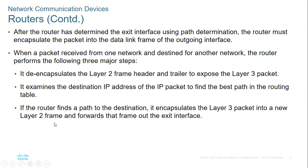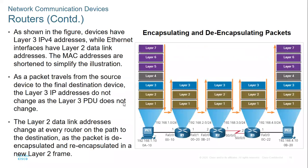When two routers communicate, they already know each other's MAC addresses. When the packet moves from one router to the other, we need to change the destination MAC address — the new destination MAC address will be the MAC address of the next router. This is what happens when you are sending something from PC1 to PC2, following the OSI model.